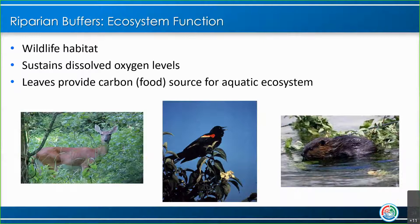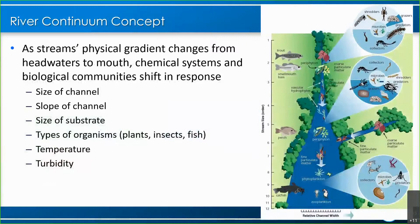The riparian area also sustains dissolved oxygen levels, and leaves and other organic matter from the riparian area provide a food source for the aquatic ecosystem.